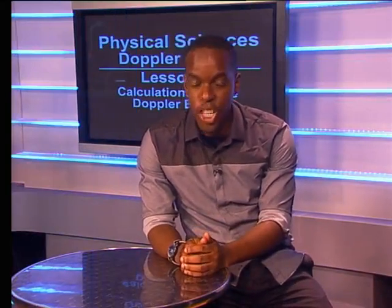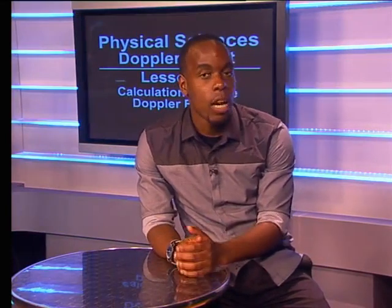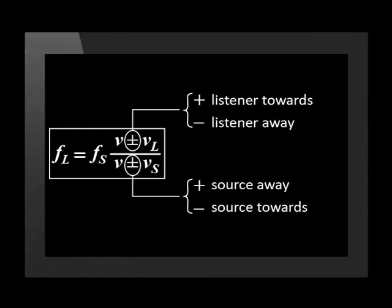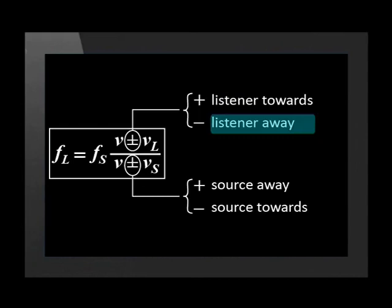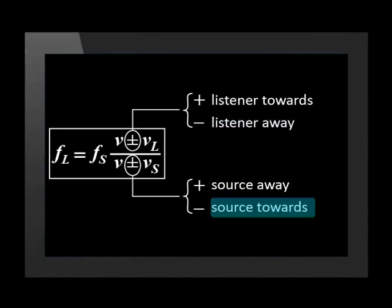In these examples, we have calculated the observed frequency for different situations. Notice that the plus and minus signs in the equation can change depending on the movement of the listener and the source. The positive direction is always towards the source. The velocity of the listener is positive when moving towards the source and negative when moving away. The velocity of the source is positive when moving away from the listener and negative when moving towards the listener.